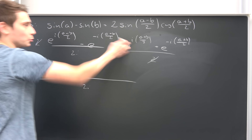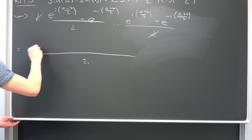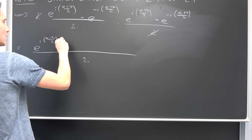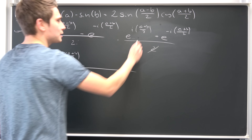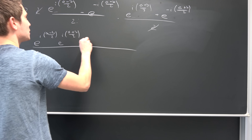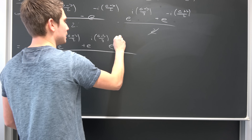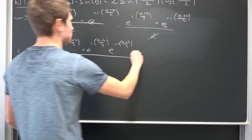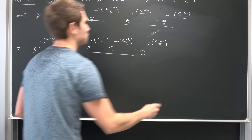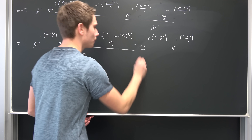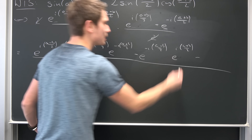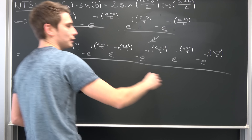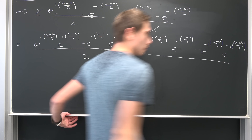We can just multiply all of this stuff together and see what we get. Writing everything out: first term is e to the i times (a minus b) over 2, times e to the i times (a plus b) over 2. Second term: positive e to the i times (a minus b) over 2, times e to the negative i times (a plus b) over 2. Third term: negative e to the negative i times (a minus b) over 2, times e to the i times (a plus b) over 2. And last: negative e to the negative i times (a minus b) over 2, times e to the negative i times (a plus b) over 2. That's a lot of work.